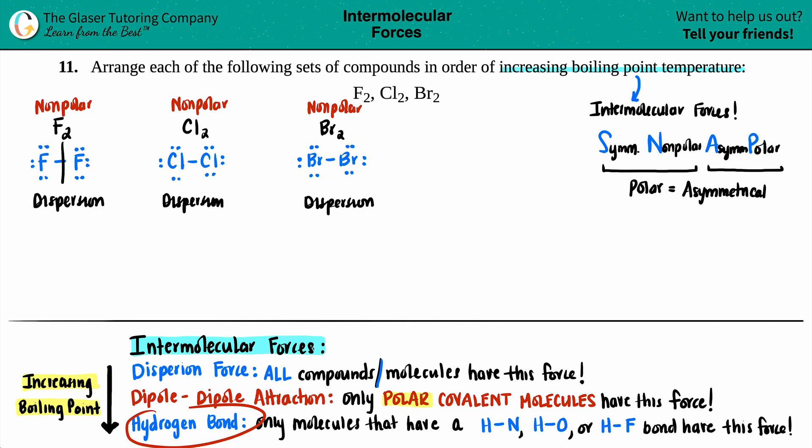Let's move on to hydrogen bonding. Well, hydrogen bonding is for only molecules that have an H-N, an H-O, or an H-F bond. But in all these examples, there's no hydrogen. So how can you have a hydrogen bond without any hydrogen to begin with? So in these cases, we're just dealing with just dispersion forces.